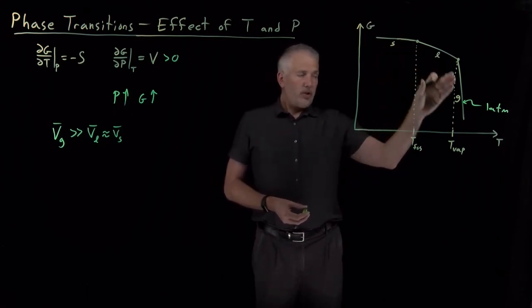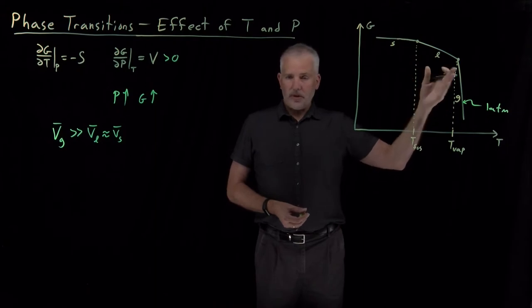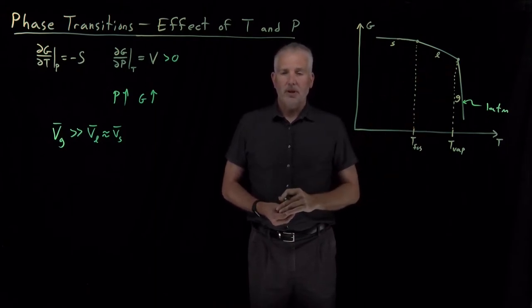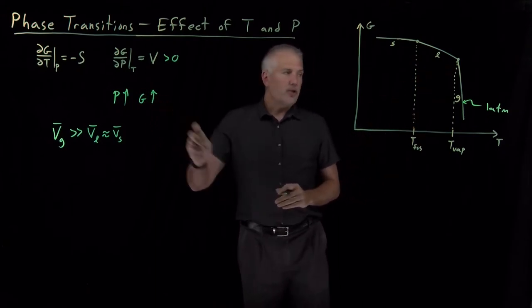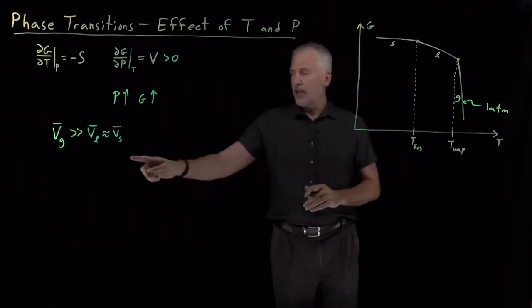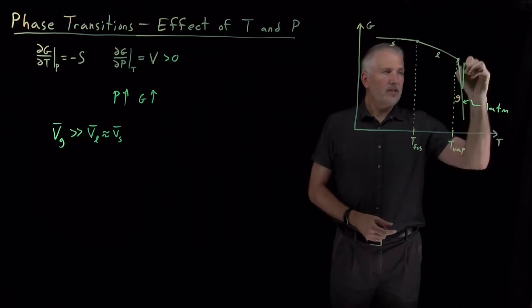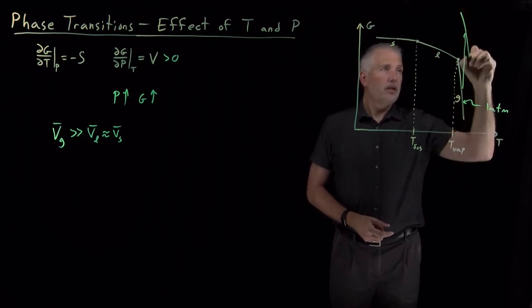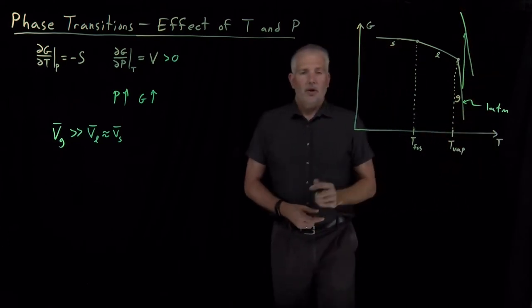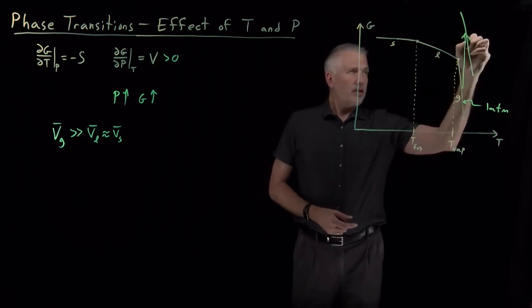We can redraw these curves at a different pressure. If I increase the pressure to 2 atmospheres or 10 atmospheres or some higher pressure, all of these free energy curves are going to increase. The one that's going to increase the most is the one with the highest volume—the gas phase. So this curve for the gas phase is going to increase by quite a bit. So that curve has gone up.